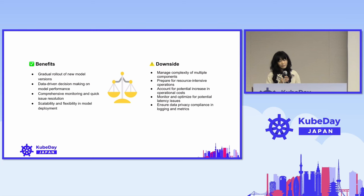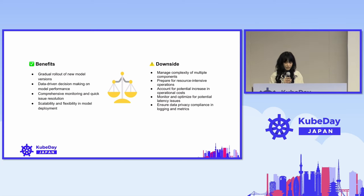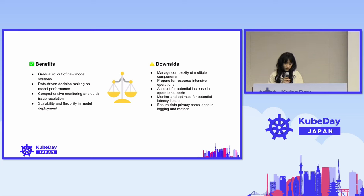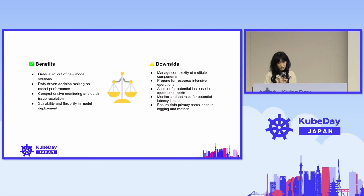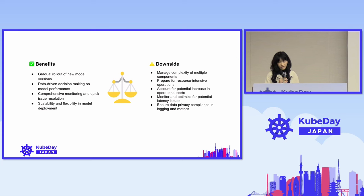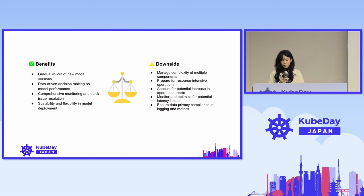We can also bring in some kind of metrics that we need. And then we also have comprehensive monitoring and solutions because we are gathering the metrics. We manage flexibility and model deployment. But the downside is the complexity, and there are resource-intensive operations. It can also increase operational cost because we are managing multiple infrastructure systems at once. And we need to make sure that we optimize for financial latency. Of course we also need to make sure this meets compliance requirements, especially for logging and metrics.